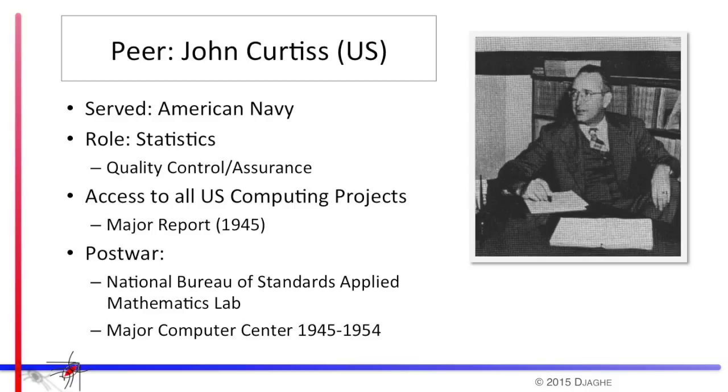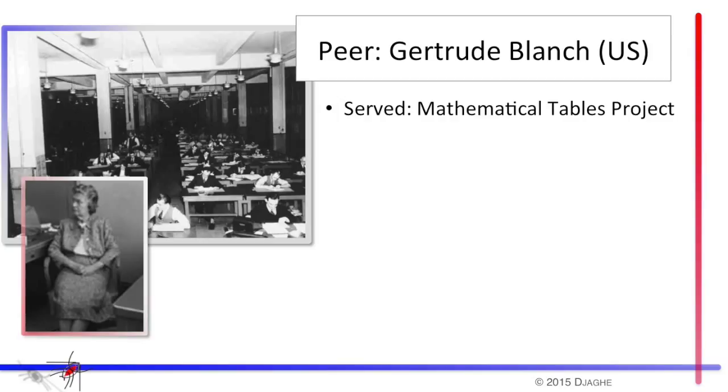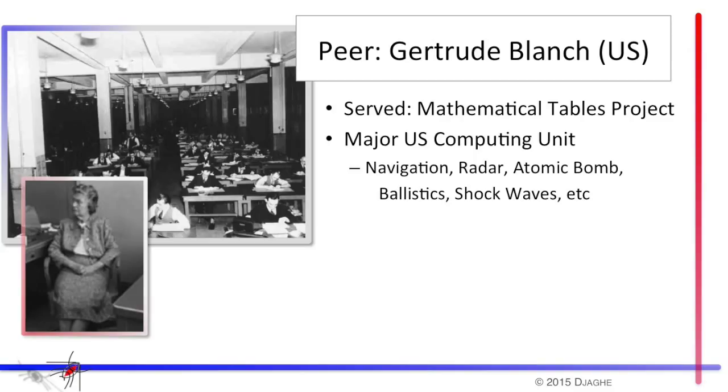Immediately after the war, he was appointed to be the head of the National Bureau of Standards Applied Mathematics Laboratory, which very quickly became a major computing center, both using machines and developing them. One of the items that was noted on his personnel record was that he was unmarried and had never been married. A second peer from the United States was Gertrude Blanche. She served as the director of the Mathematical Tables Project, which was indeed the largest computing organization in the American government during the Second World War. It did computing for every aspect of the war: navigation, radar work, the atomic bomb, ballistics, shockwaves. She was, in fact, the 35th woman in the United States to get a mathematical PhD. Her record also noted that she had never married. And it also noted that her sister was an active member of the Communist Party.